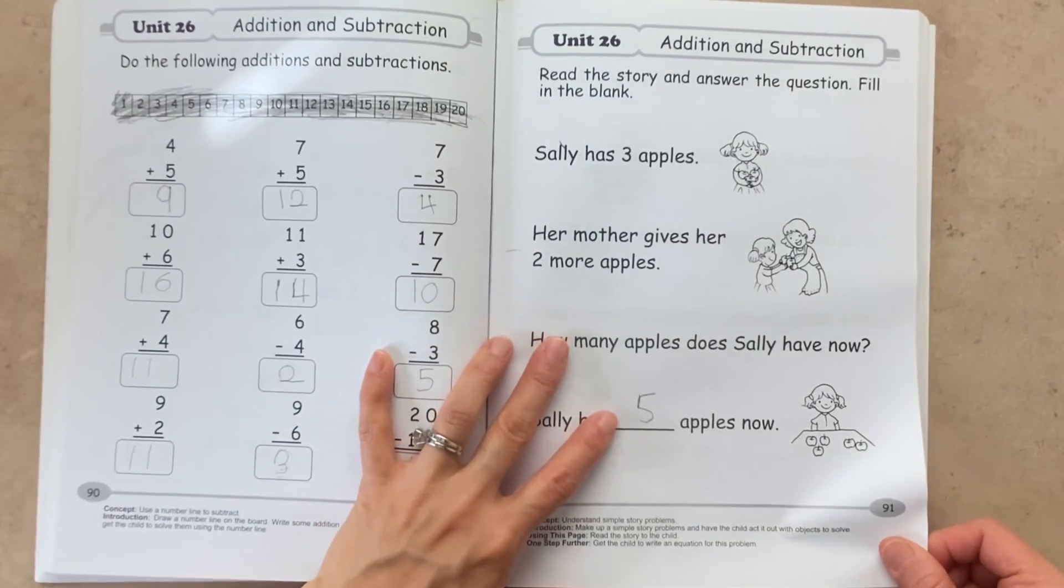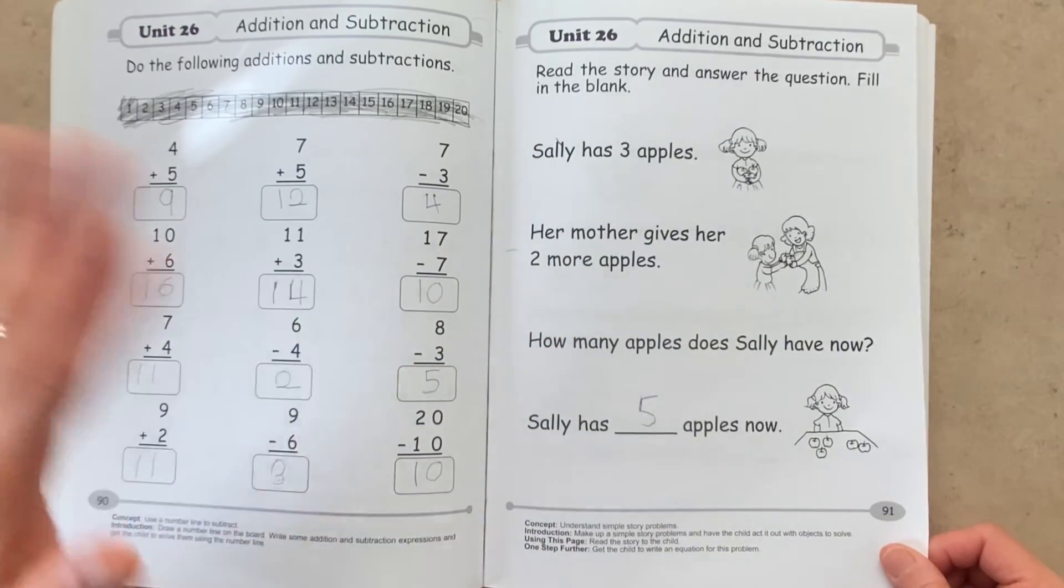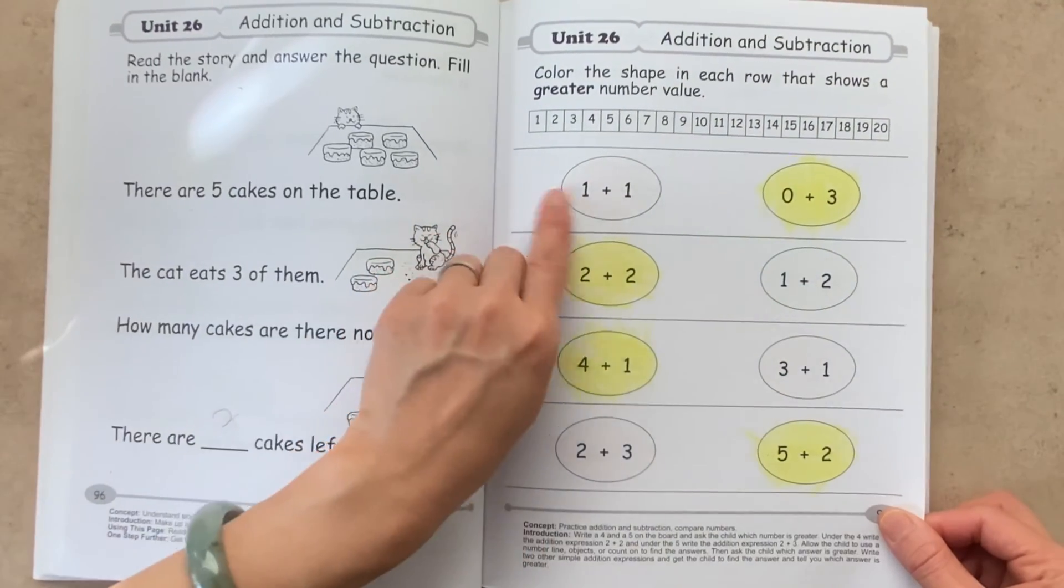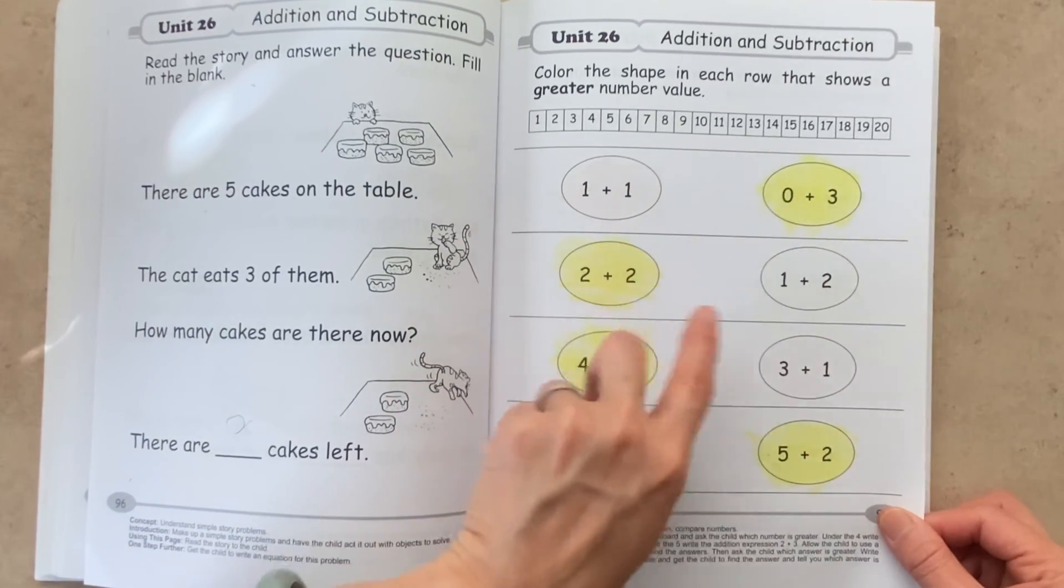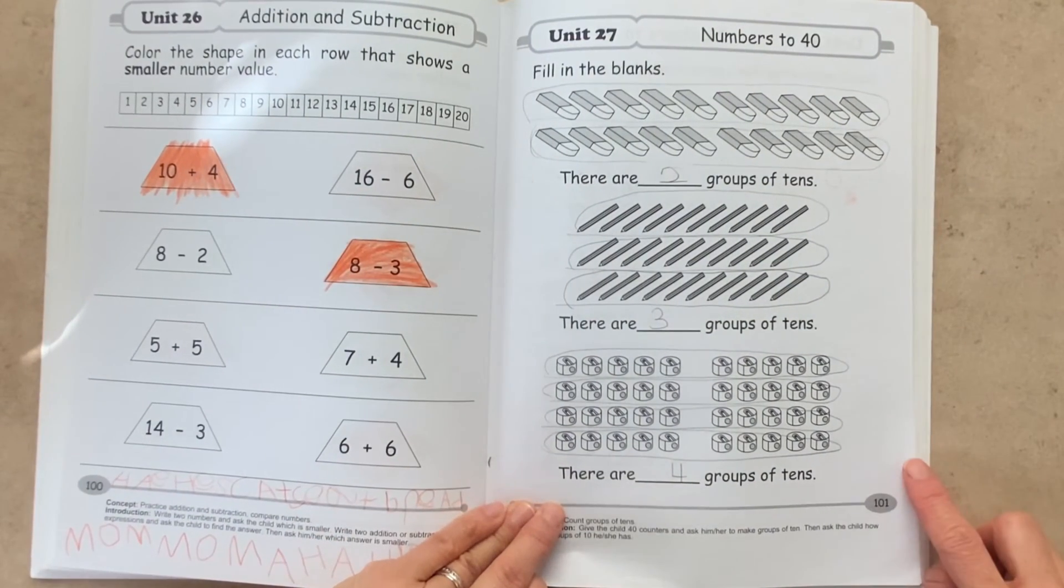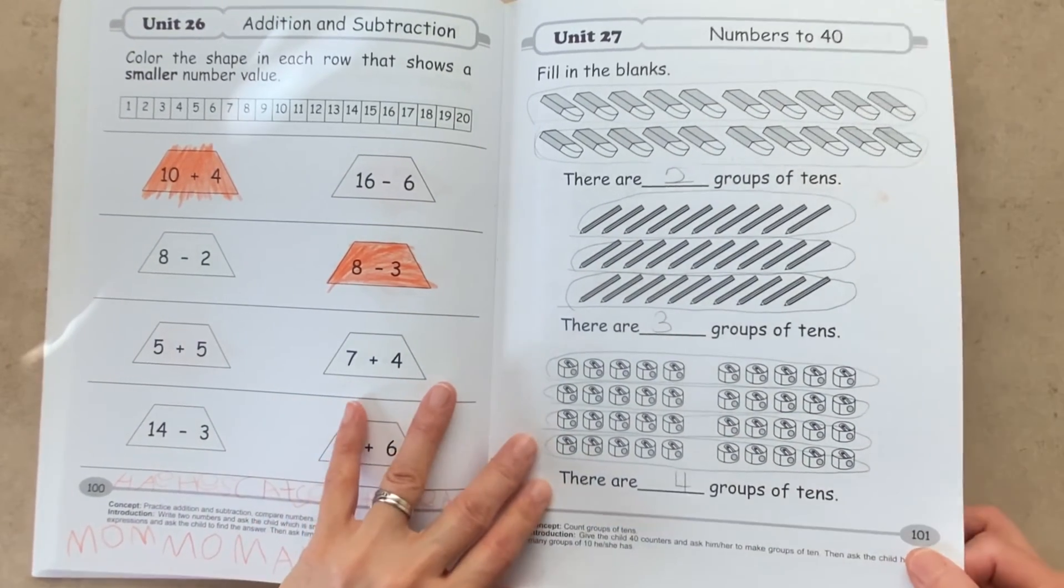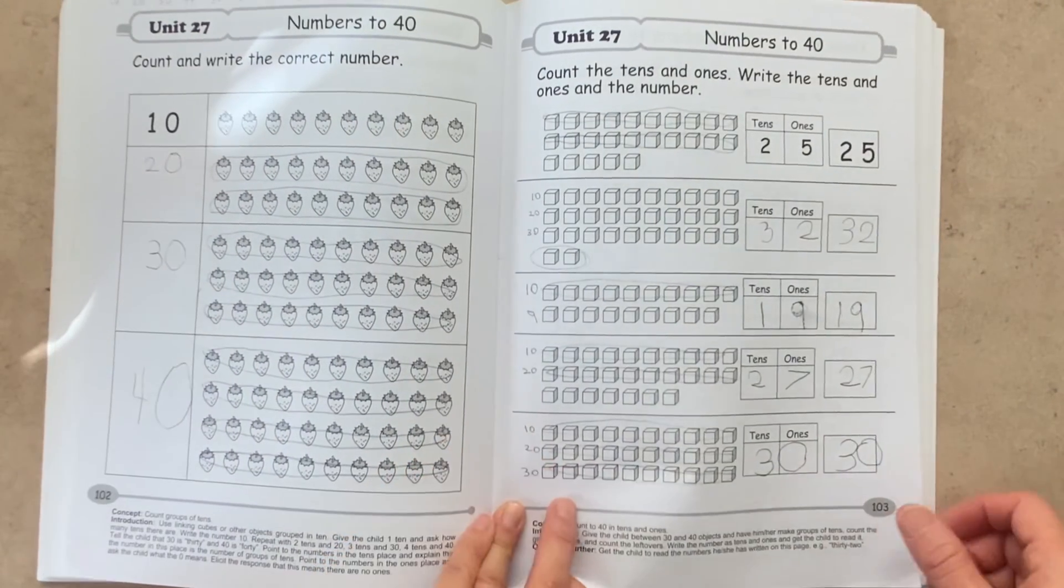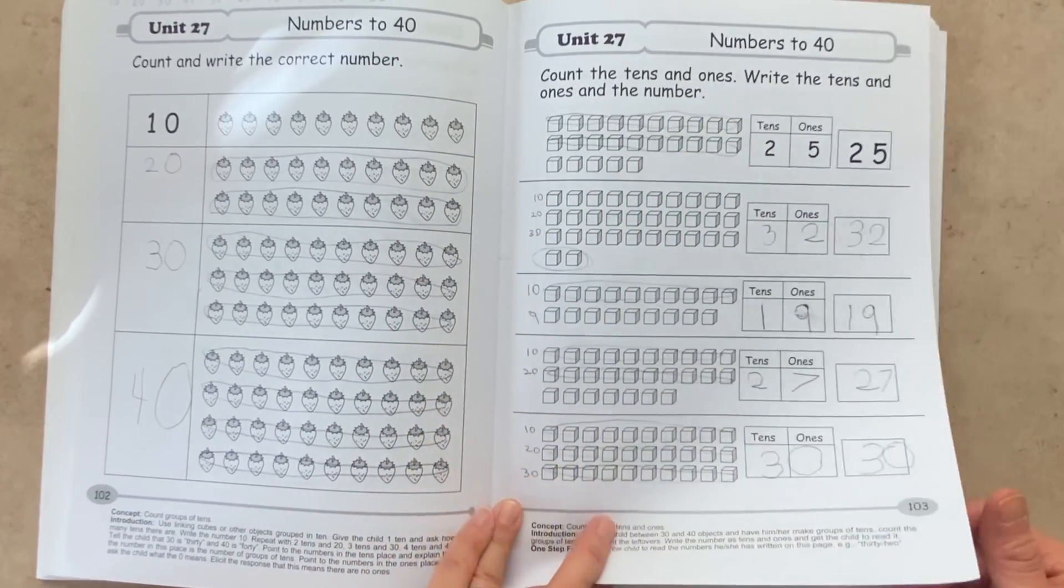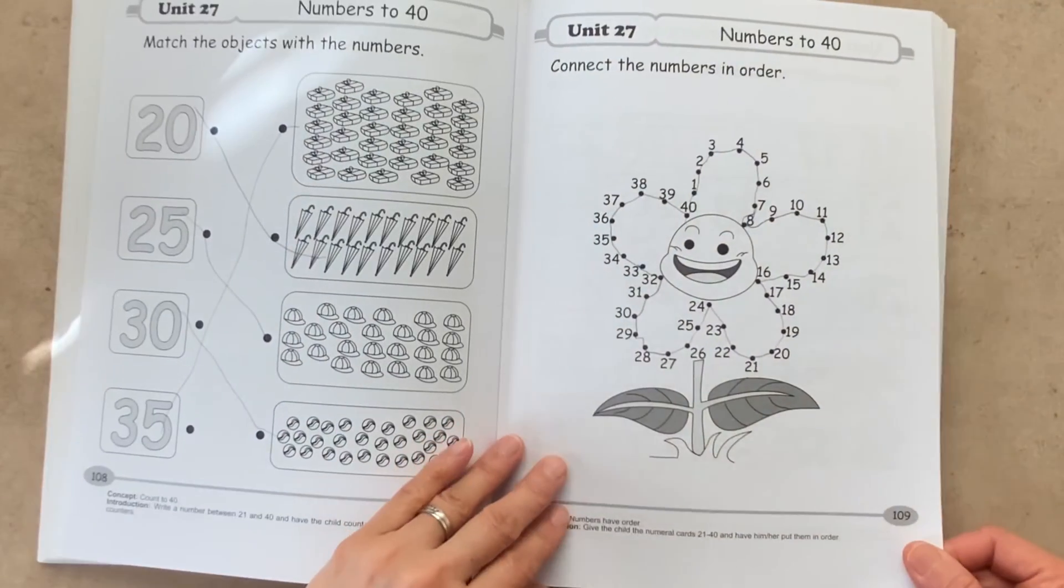Because in Singapore math, in the upper levels, you're going to see a lot of word problems where you're applying them to real-life situations. Now here again, we're going to compare which answer is larger or greater. So now starting a unit 27, we will be looking at numbers up to 40. So we get to count in groups of 10. And here we get to break them down into 10s and 1s, like we saw before. And there are various ways to show the same concept.